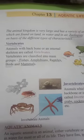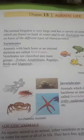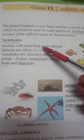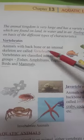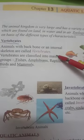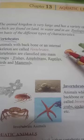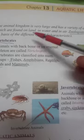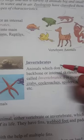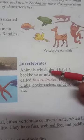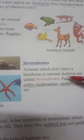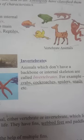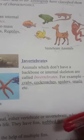In this chapter I have explained about vertebrates and invertebrates. Vertebrates are those animals which have a backbone and internal skeleton. Animals which do not have a backbone or any kind of internal skeleton structure are called invertebrates.